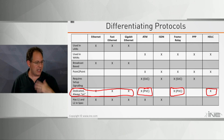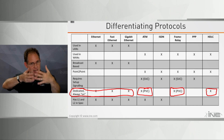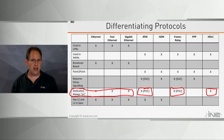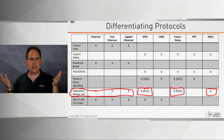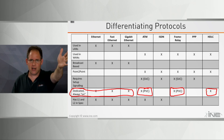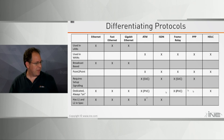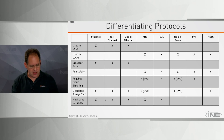HDLC was designed around the assumption that the circuit it rides across is always up. HDLC also doesn't have any kind of addressing — when you put data inside an HDLC header there's no layer 2 address, because HDLC says there's no need to address it when it can only go to one person at the other end of the line.